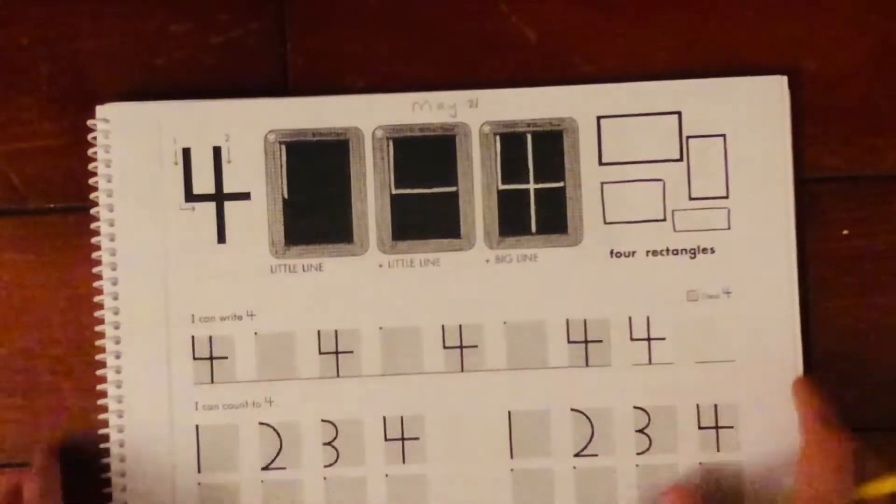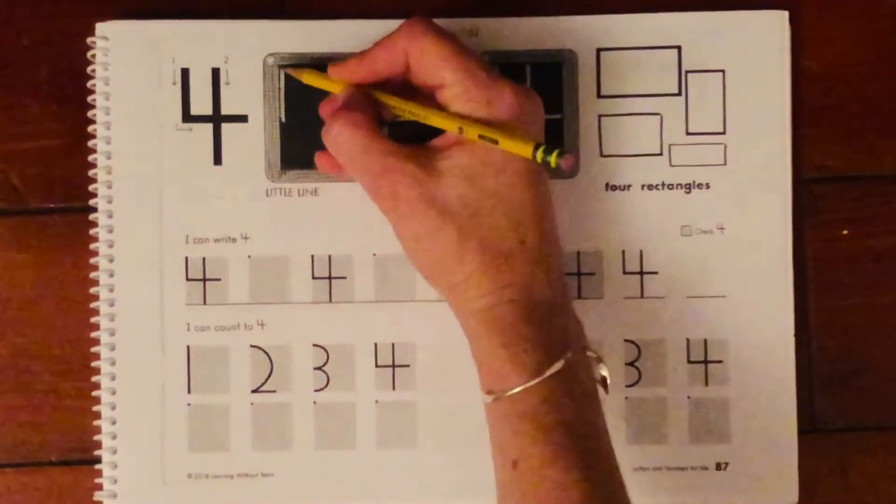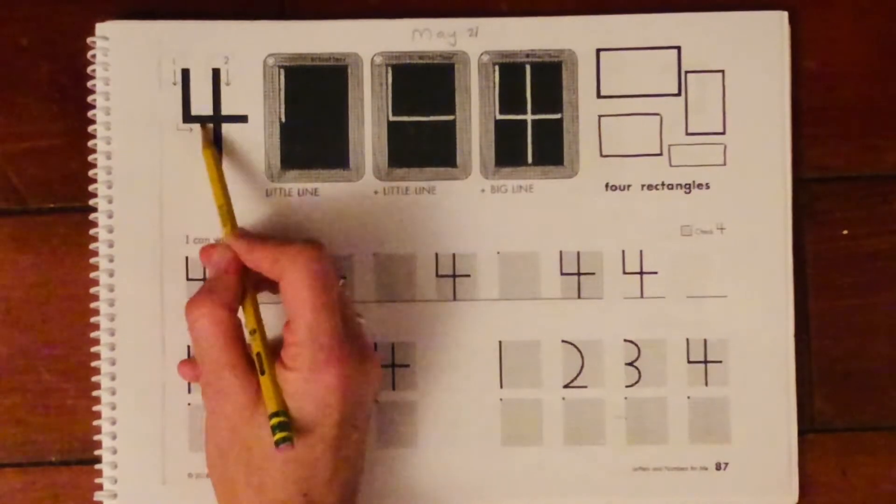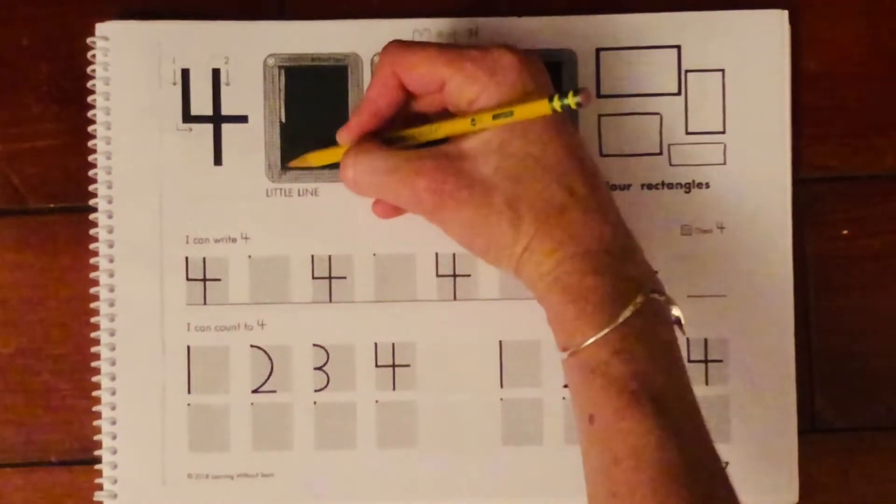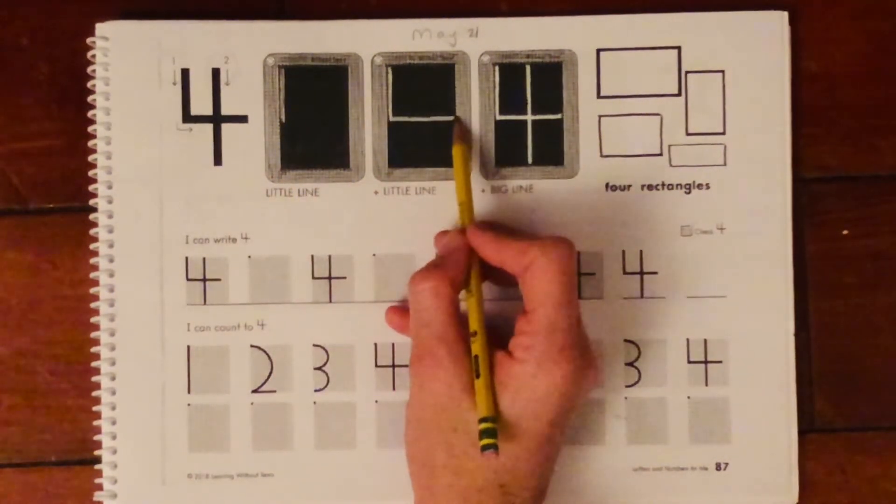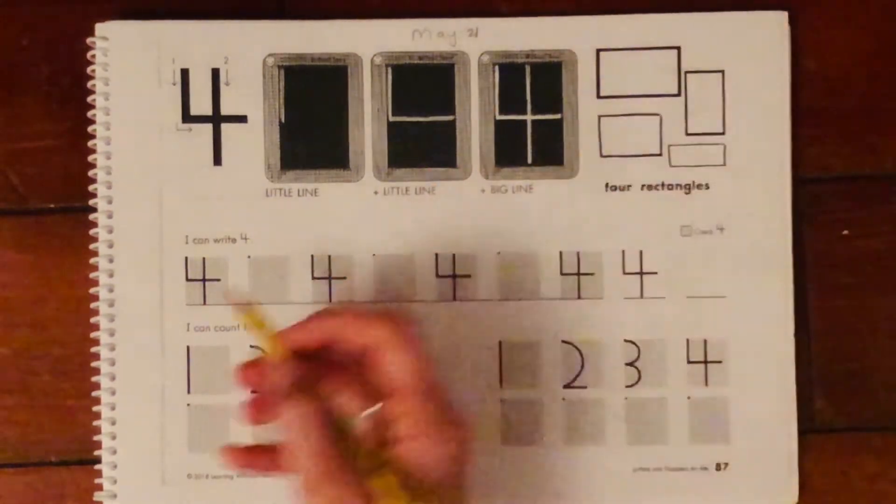We're also going to work on number four today. Okay. So number four, the first thing is you can see the numbers here. It says one, two, and then we do this. So the first thing we do is pull a big line down. Oh, excuse me. We do a little line and then a little line over and we come back to the top and we come all the way down, big line down.